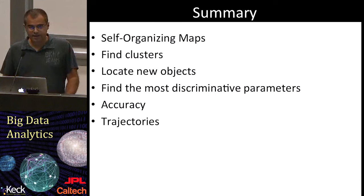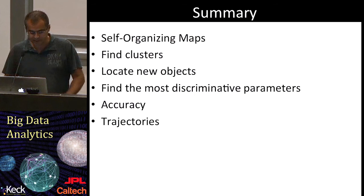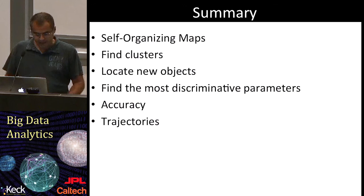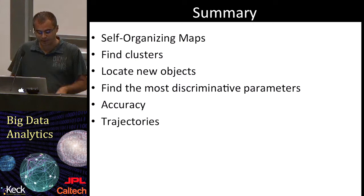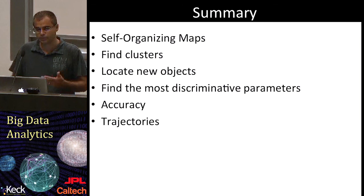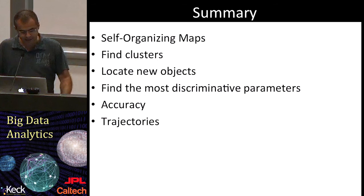Finally, in this video we have seen self-organizing maps and how they can be used to answer important data mining questions like how to cluster data, which components are the most important, and how to locate new objects. We have also described two types of errors that help us understand the quality of the clustering and of the single localization, and we have briefly talked about trajectories and how self-organizing maps can be used for time series to see how an object evolves. This concludes the clustering series. Thank you for watching.